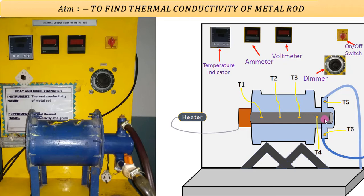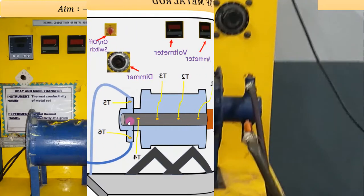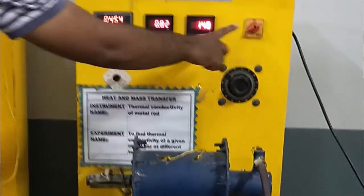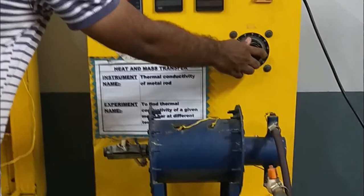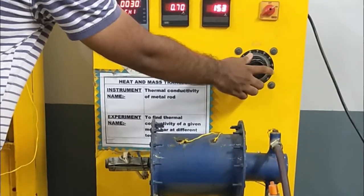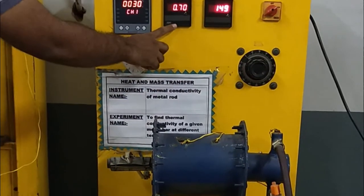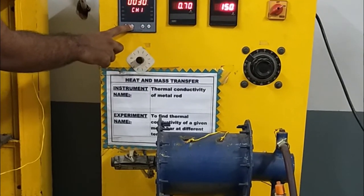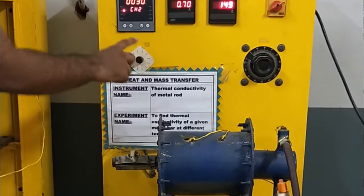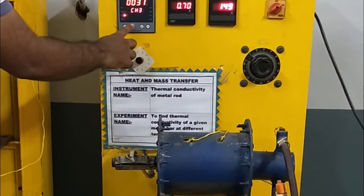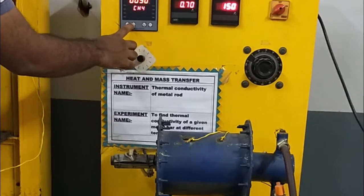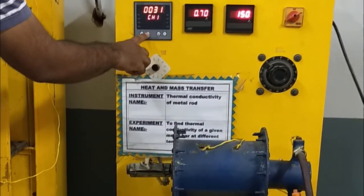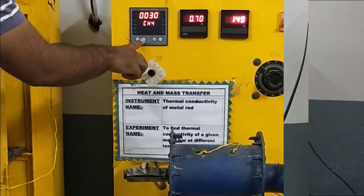Let me start the switch of the experimental setup toward the on position. Once we start the experimental setup, we need to set a certain voltage and the corresponding amperes visible on screen. We then need to wait for the steady state. Until steady state is achieved, we are not able to take readings. For steady state, we require approximately half an hour. After the steady state, we have a set of readings.